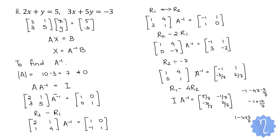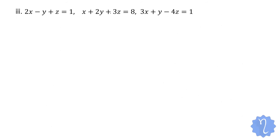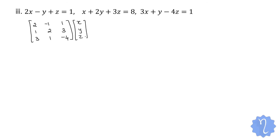Now let us do the next question with 3 variables and 3 equations. Writing in matrix form: [2, −1, 1 / 1, 2, 3 / 3, 1, −4] into [x, y, z] = [1, 8, 1].